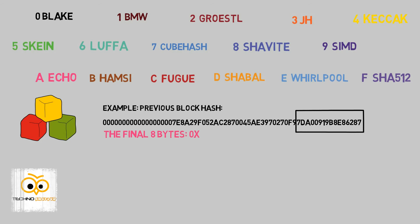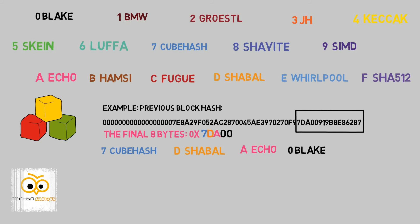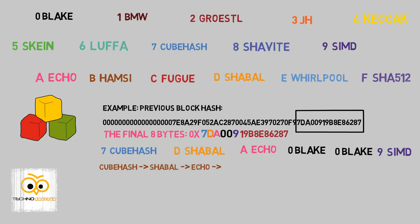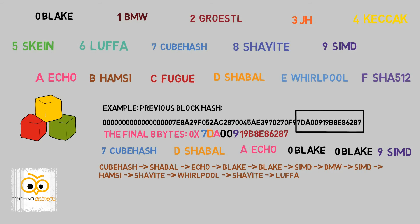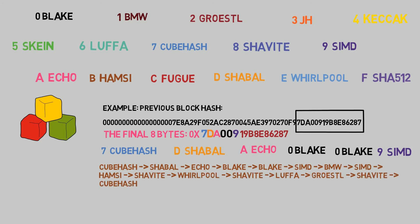For example, the first digit 7 uses the CubeHash algorithm. Next, D uses the SHAbal algorithm. Next, A uses the Echo algorithm. Next, 0 uses the Blake algorithm. Next, 9 uses the SIMD algorithm. Similarly, the remaining digits each use their respective algorithm, and you can see the different algorithms being used to create the hash.